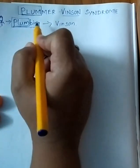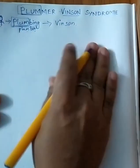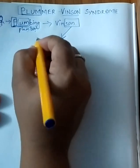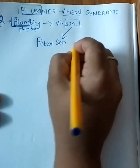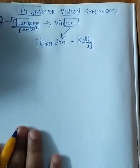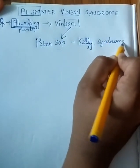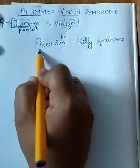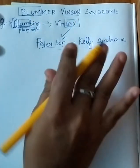So the plumber's name was Vincent. He had sons, and one son's name starts with P — Peterson — and the other son is Kelly. So Peterson-Kelly syndrome is the other name of Plummer-Vinson syndrome. There was a plumber named Vincent; his son's names give us Peterson-Kelly syndrome as the alternate name.